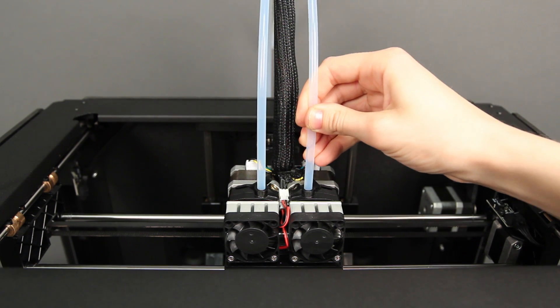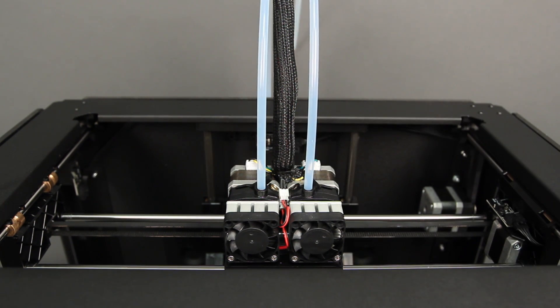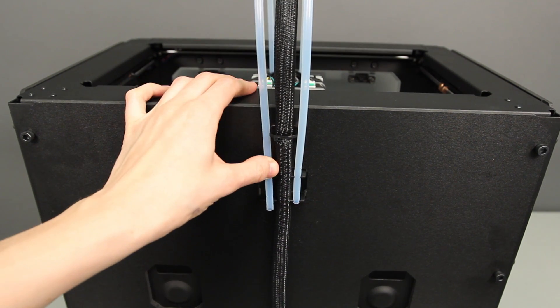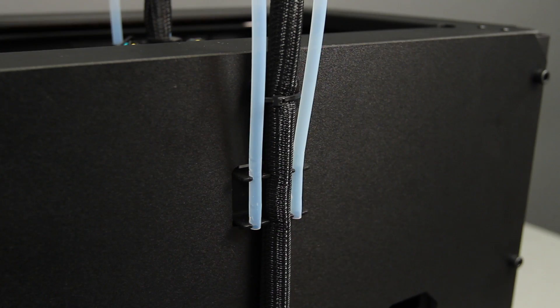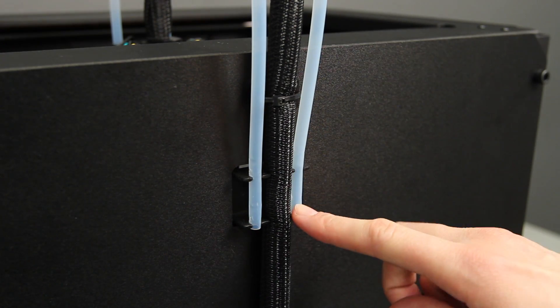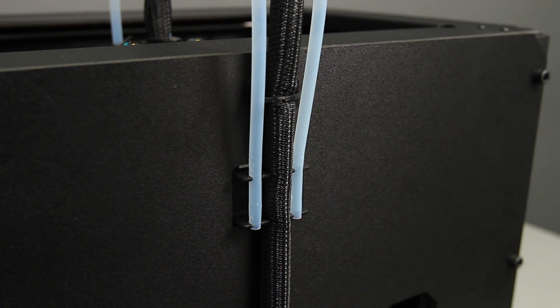Do the same for the second guide tube, placing it in the second extruder and in the corresponding tube holder at the back. Make sure that your guide tubes don't hang down past the bottom of the guide tube holders.